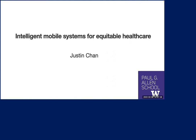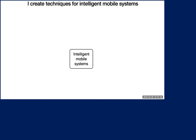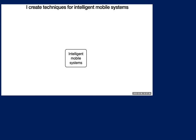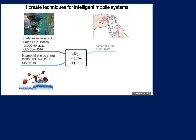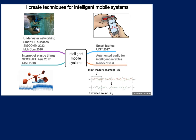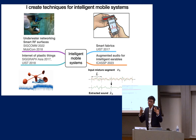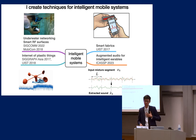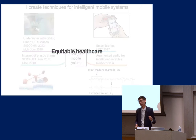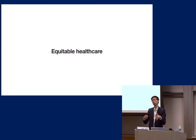Hi everyone, I'm really happy to be here. Today I'd like to talk about some of my work on intelligent mobile systems. I design computational techniques and methods for intelligent mobile systems, and over the course of my PhD I've worked across a broad range of application areas including underwater networking, smart RF surfaces, the internet of plastic things, smart fabrics, and augmented audio for intelligent earables. But today I want to focus on one key application area.